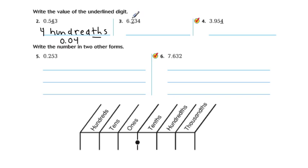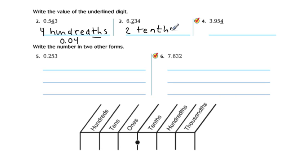The value of this underlined digit — well, it's a 2, so I know the value is going to be 2 of something. And it's 2 in the tenths place. Tenths is the one that's right next to the decimal. And it's 2 tenths. Mathematically, it's 2 in the tenths place, or 0.2.